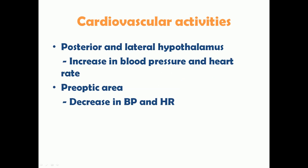The cardiovascular activities controlled by the hypothalamus: the posterior and lateral hypothalamus cause an increase in blood pressure and heart rate. When they sense a decrease in blood pressure and heart rate, they activate mechanisms to increase these values, maintaining cardiovascular homeostasis. Conversely, the preoptic area of the hypothalamus leads to a decrease in blood pressure and heart rate, activating mechanisms to lower elevated values.